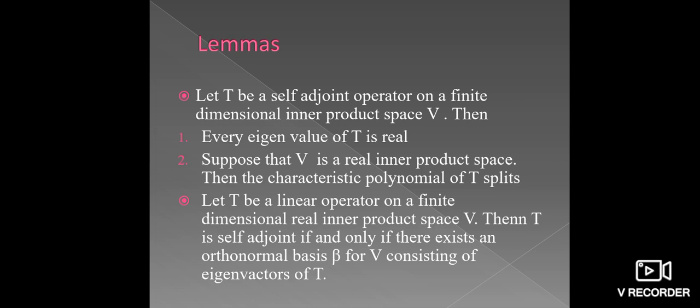Next statement: let T be a linear operator on a finite dimensional real inner product space V. Then T is self-adjoint if and only if there exists an orthonormal basis β for V consisting of eigenvectors of T.